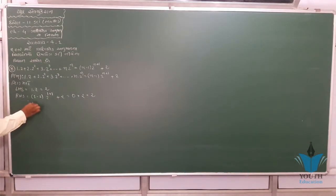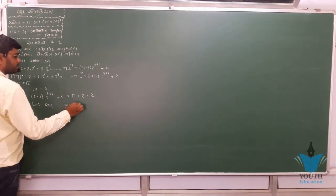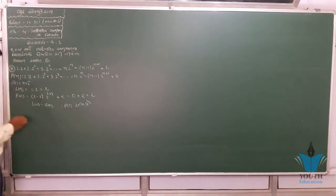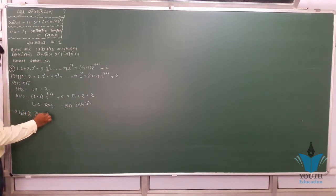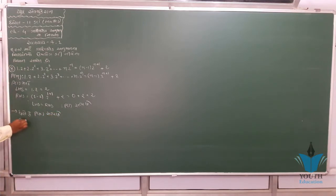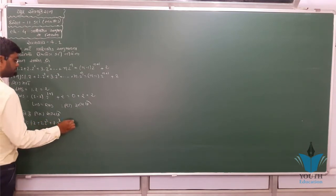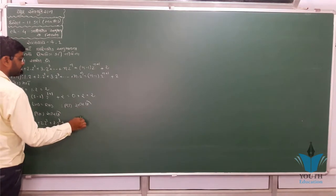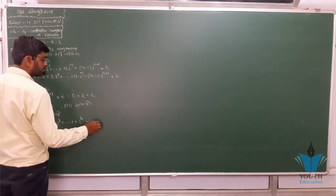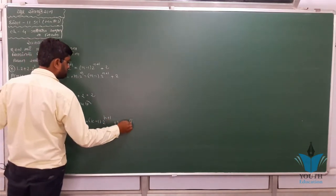Now assume P(k) is true: LHS. We assume P(k): 1·2 + 2·2² + 3·2³ + ... + k·2^k = (k-1)·2^(k+1) + 2. This is our inductive hypothesis, result A.